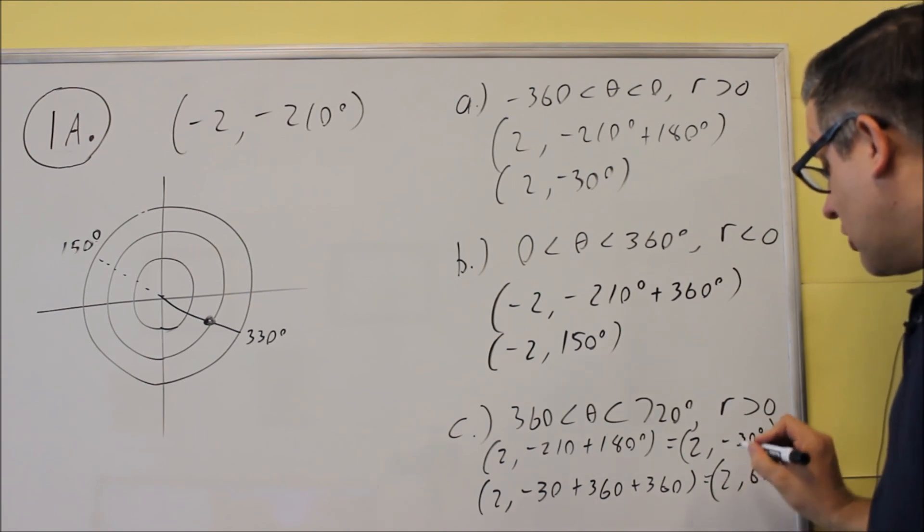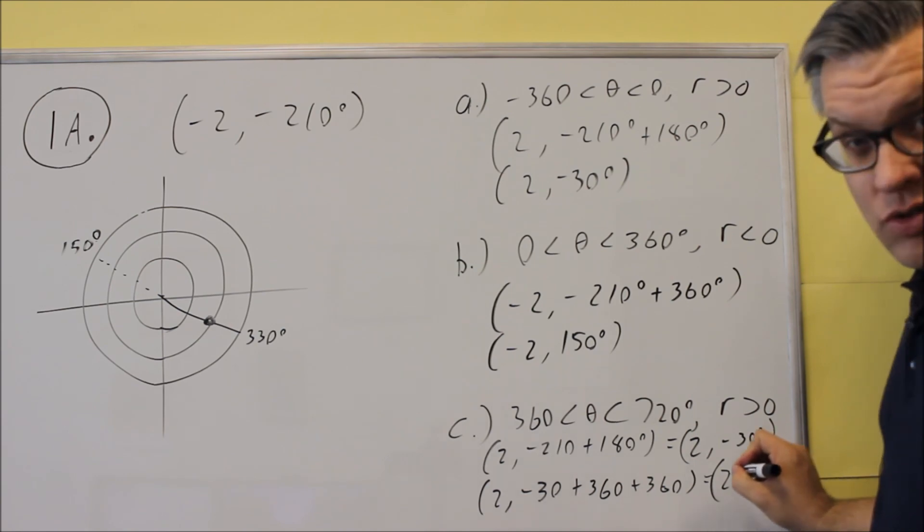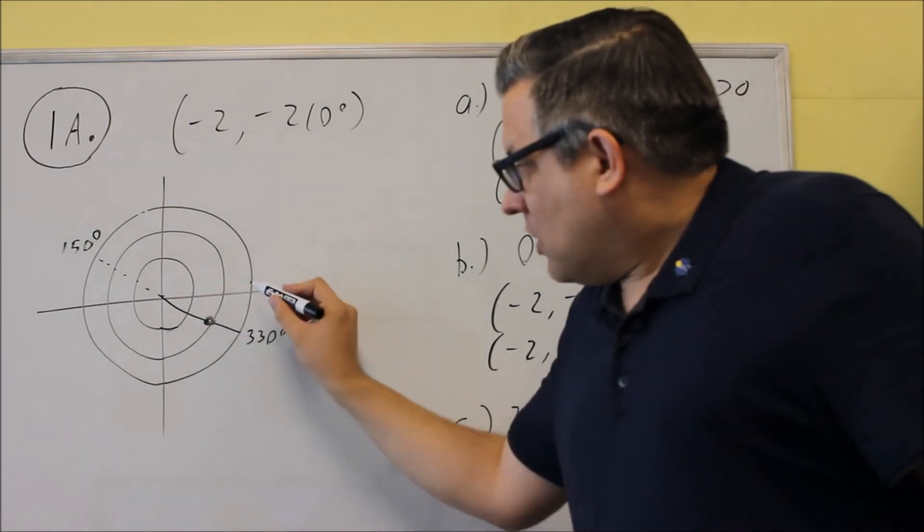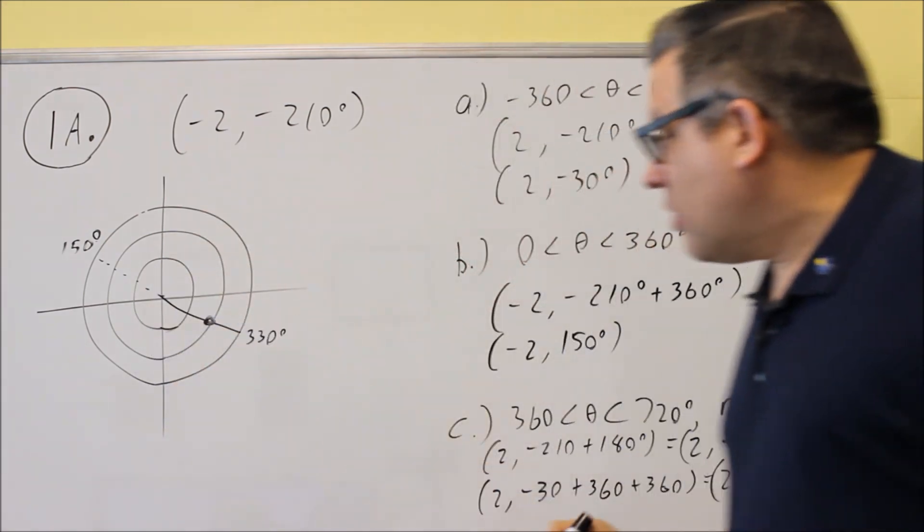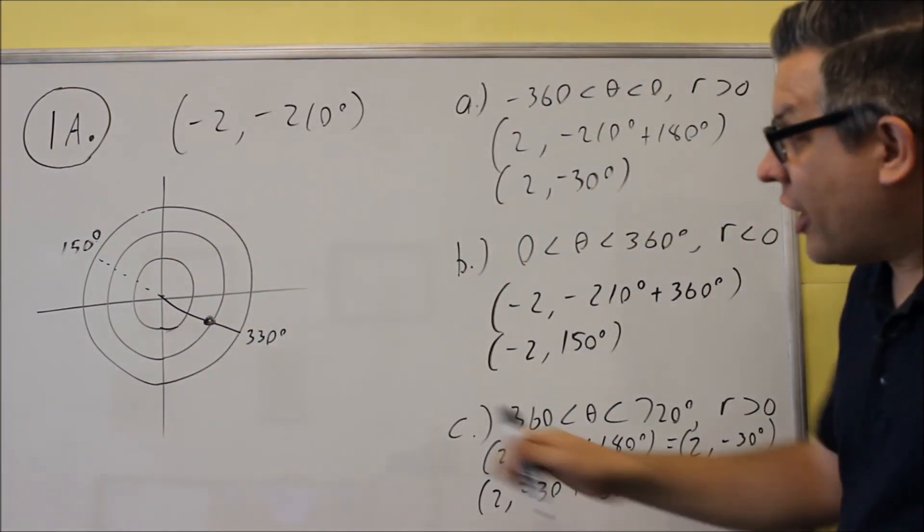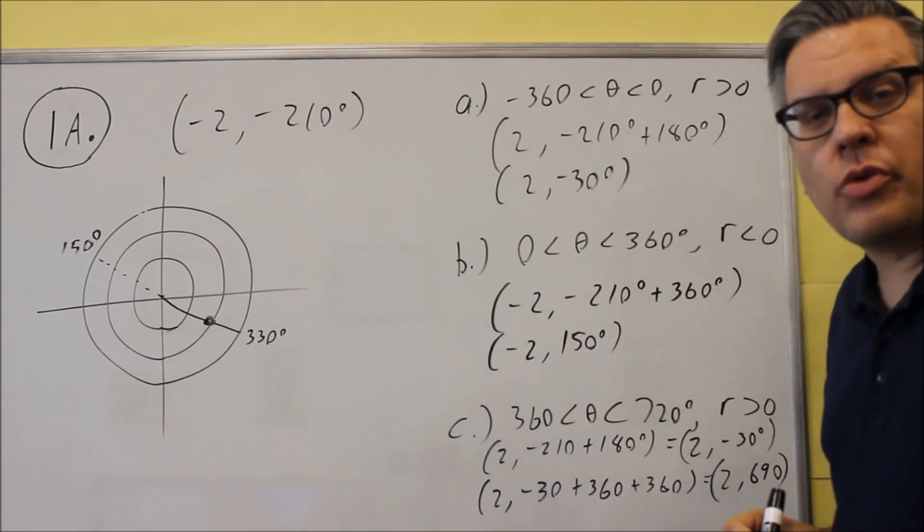So my answer for C is 2 comma 690, and that answers this question. If I were to see if that works, negative 30, I would go to here, go around once, go around twice. That would take me to 690 degrees. That would be the same, arrive at the same spot, which means it's equivalent to the original point we had.